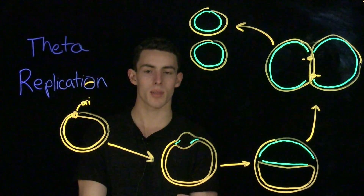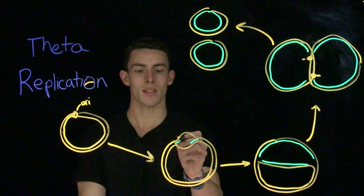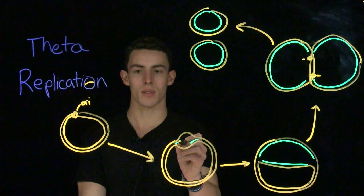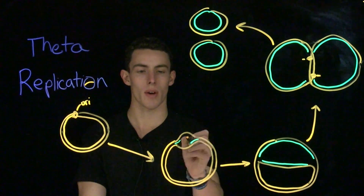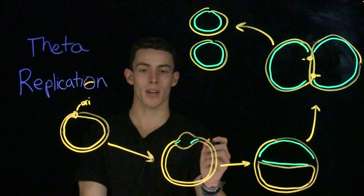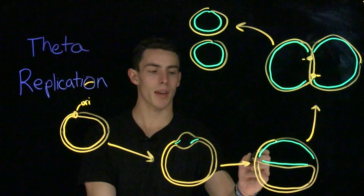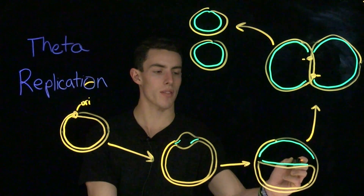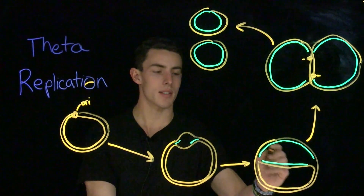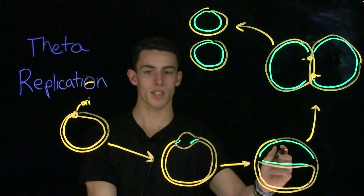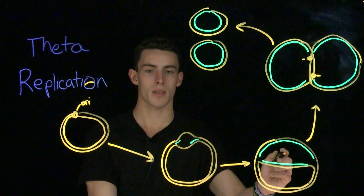Binding of these proteins to the origin of replication unwinds the DNA and forms what's known as the replication bubble. As replication begins, DNA replication forms two forks that go out in opposite directions of each other. As these two forks continue going away from each other, this tell-tale theta shape is formed.